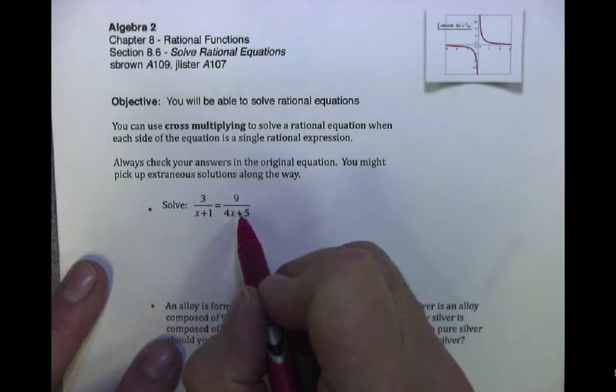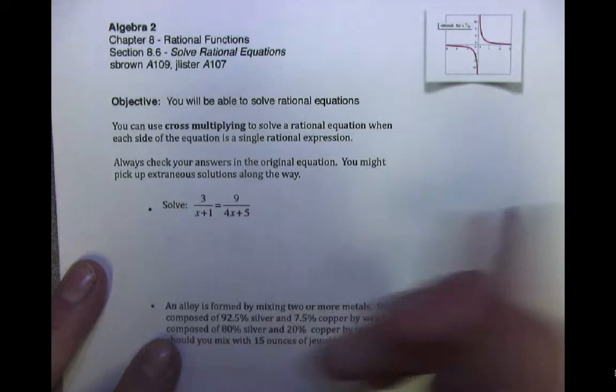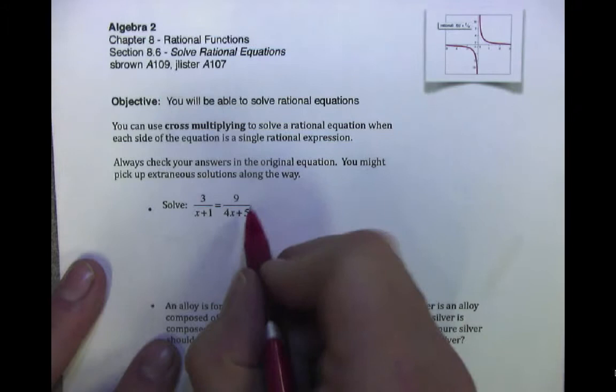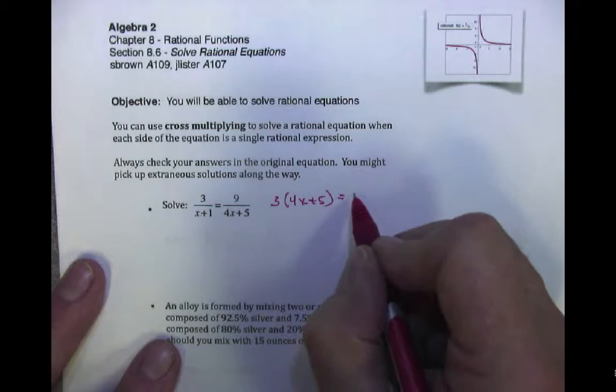Cross-multiply. Now don't do anything weird. I've seen people say they're cross-multiplying and they bring this guy up here and bring this guy down here and all of a sudden everything disappears and you don't have an equation anymore. No, you're still going to have an equation after you cross-multiply. The idea is to bring this guy up over here, leave him where he is, and then bring this guy up over here, leave him where he is, and then work the problem out.